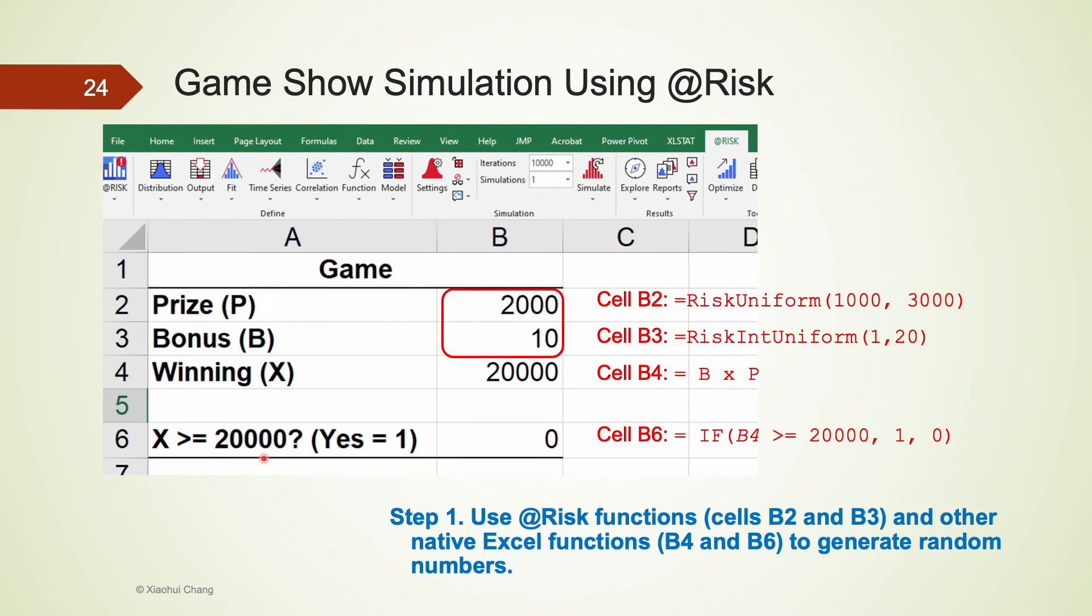I highly recommend you giving these variables easy to understand names, for example, price, bonus, winnings, instead of A, B, C, or X, Y, Z for all variables. Because price has a uniform distribution between $1,000 and $3,000, in @Risk, we use risk uniform function to simulate it. Bonus is also uniformly distributed but has to be an integer, so we use risk int uniform to simulate it. Some of the commonly used @Risk functions are also summarized later in this video and also provided on our course site. Cell B4 and B6 can be defined using the native functions we just talked about a few minutes ago. Now we complete step one.